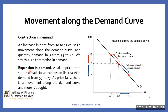On the other hand, an expansion in demand results from a falling price, holding other factors constant. For instance, if price was to fall from 10 to 7, this leads to an expansion, which is an increase in quantity demanded from 55 to 75, and a movement from one point to another along the demand curve.